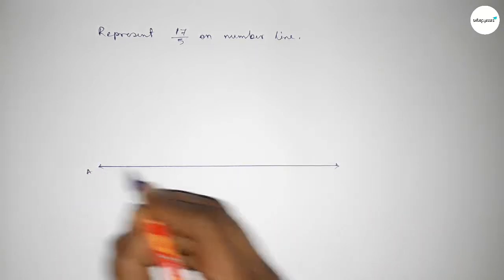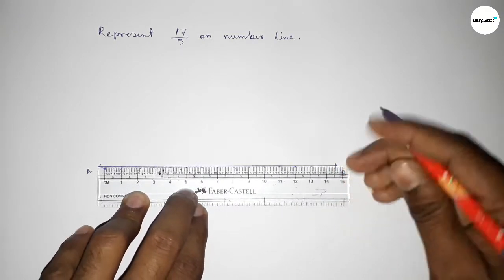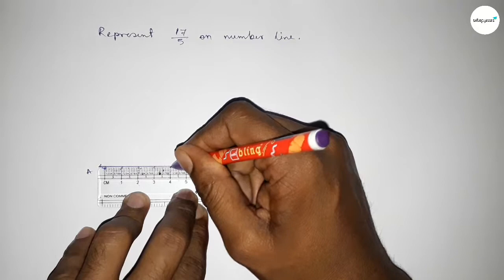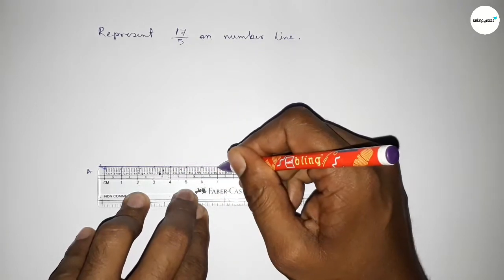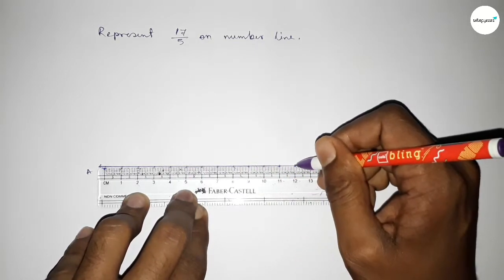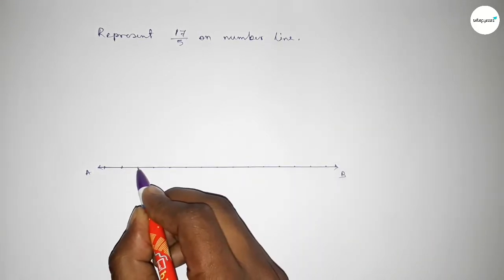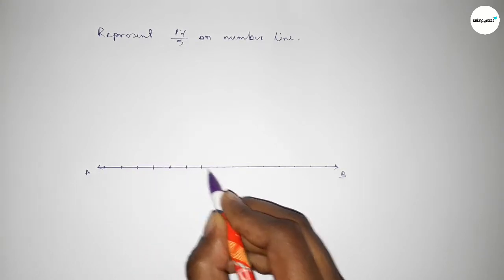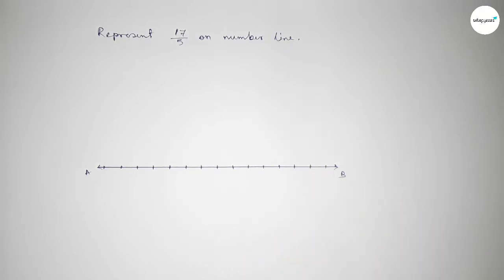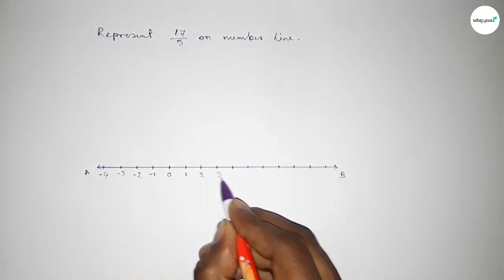Drawing a line and taking arrow marks on both sides — this is the AB line. Now we have to mark the numbers on the line using a scale. We mark the starting number 0, this side minus 1, minus 2, minus 3, minus 4, and this side 1, 2, 3.